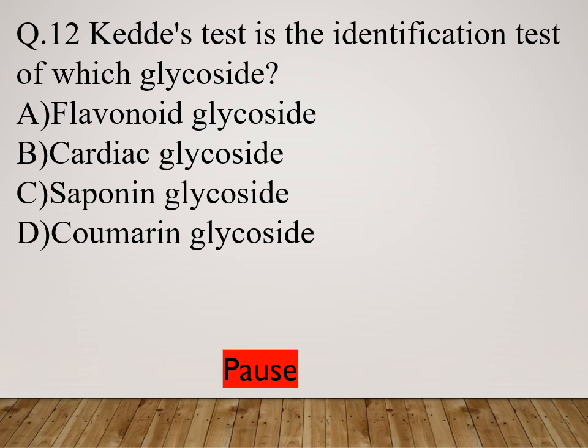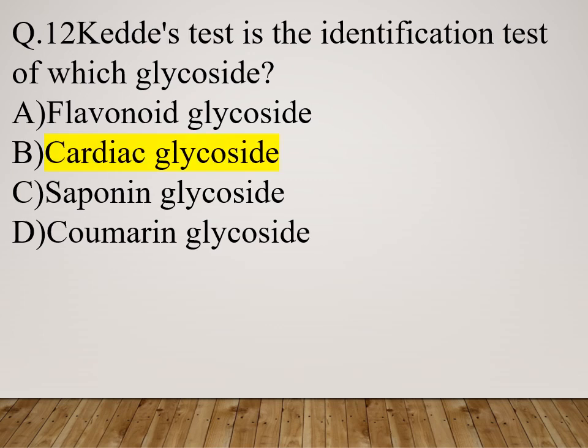The options include flavonoid glycoside, cardiac glycoside, saponin glycoside, and coumarin glycoside. The right answer is cardiac glycoside. Raymond test is the identification test for cardiac glycoside.